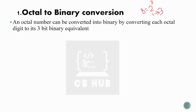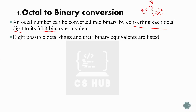An octal number can be converted into binary by converting each octal digit. Each octal digit is equivalent to 3-bit binary. There are 8 possible octal digits and their binary equivalents are listed.